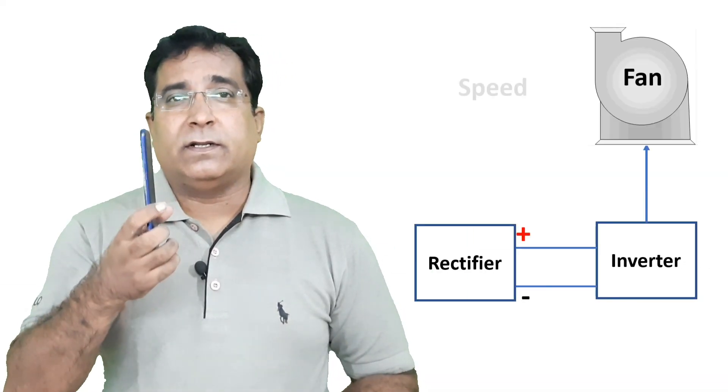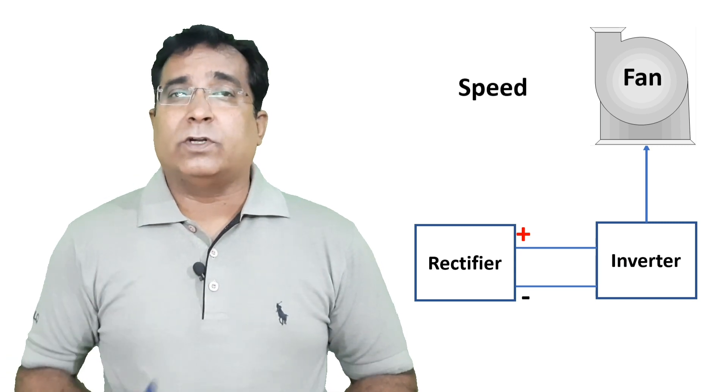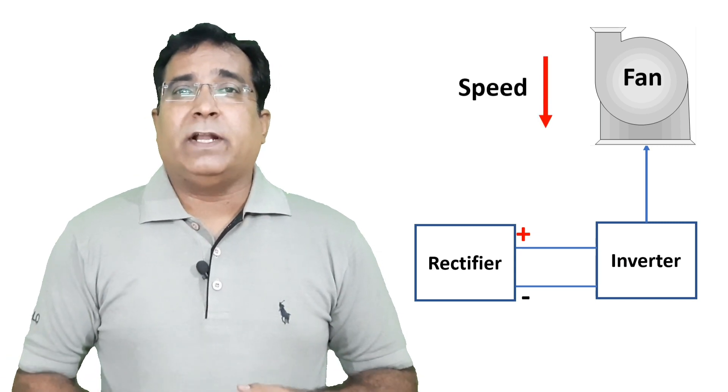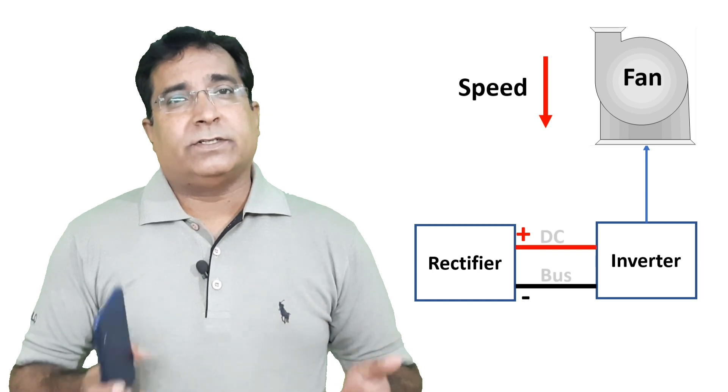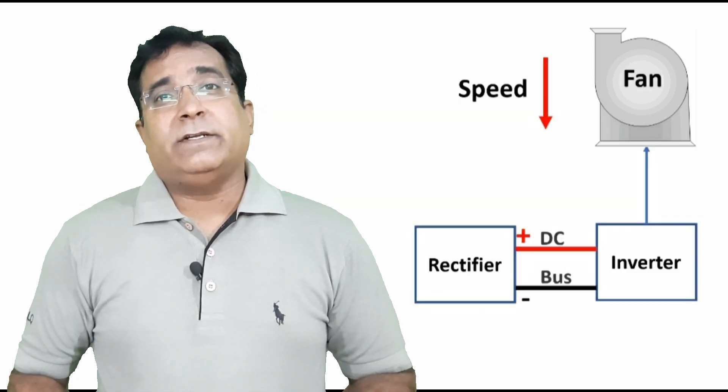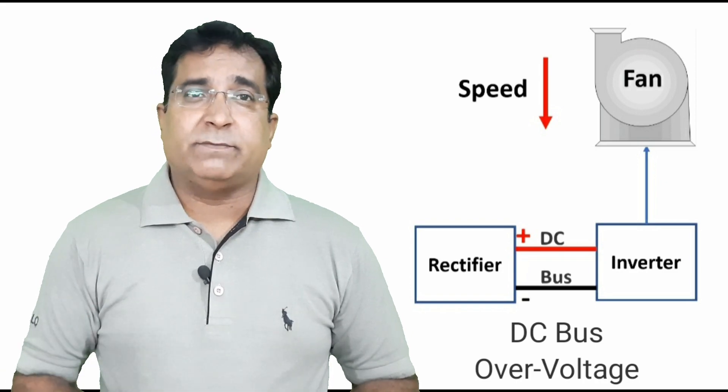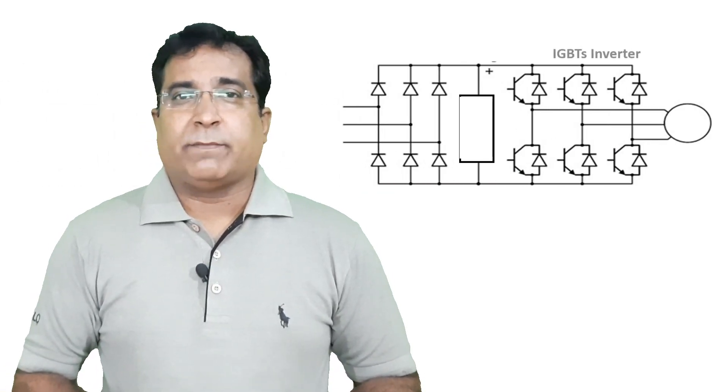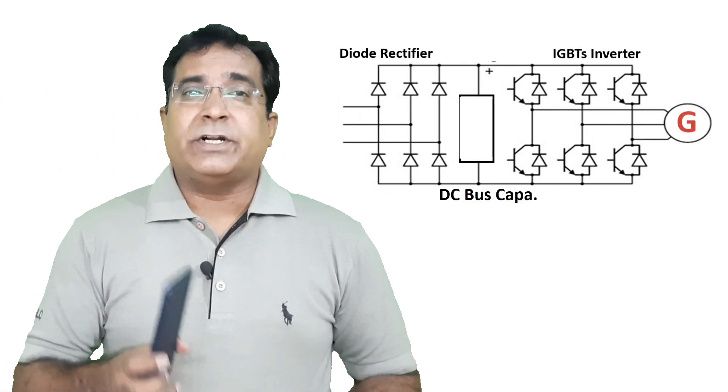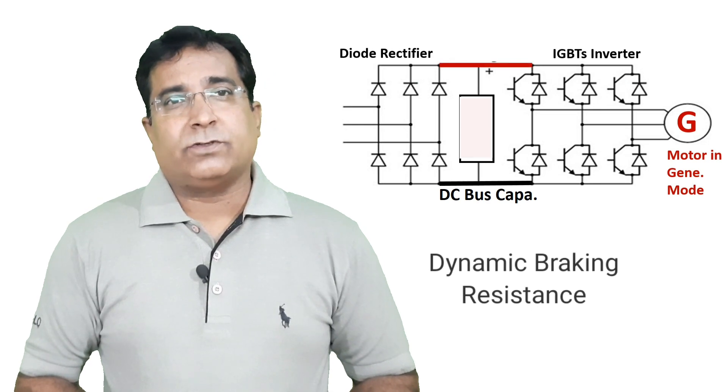For example, a fan application: if a sudden speed set point is changed from higher to lower speed, the inertia of the fan pulls the motor and regeneration takes place which causes the DC capacitor bus voltage to build up and trips the drive with DC bus overvoltage fault. Now to eliminate this problem a resistance is connected which shows the DC bus capacitor. Resultant regenerated energy is wasted as heat across resistance.